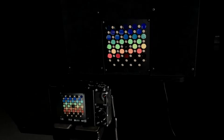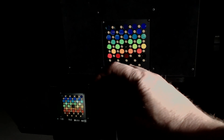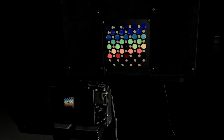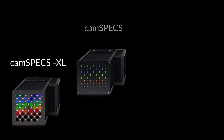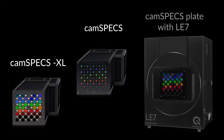To improve the color characterization of a camera, we have developed a test chart using narrowband interference filters. These are used to measure the spectral sensitivity of cameras, and there are different devices in our portfolio that can be used for this purpose.